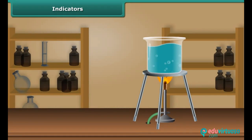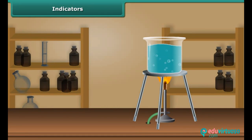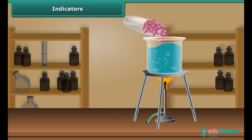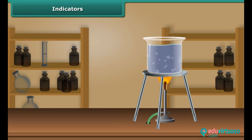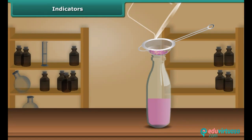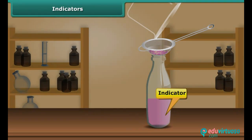Pour some distilled water in a beaker and heat it on the gas stove until the water becomes warm. Then add petals of China rose to this warm water and keep the mixture for some time until the water becomes colored. Filter this purple-red water into a bottle using a tea strainer. This purple-red solution is your indicator.